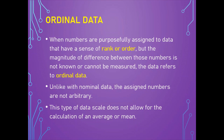When the order among categories becomes important, the observations are referred to as ordinal data. When numbers are purposefully assigned to data that have a sense of rank or order, but the magnitude of the difference between these numbers is not known or cannot be measured, the data is ordinal. Unlike nominal data, the assigned numbers are not arbitrary. This type of data scale does not allow for the calculation of an average or mean. For example, injuries may be classified by severity: 1 for fatal, 2 for severe, 3 for moderate, and 4 for minor — a natural order exists among the groupings.